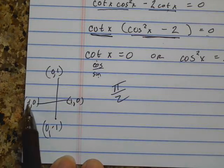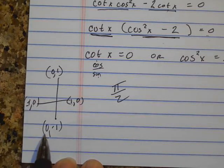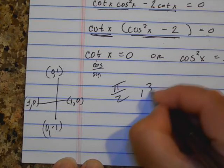If I do this, I would get undefined. Here, if I do x divided by y, I would get 0. So 3 pi over 2 is another answer.